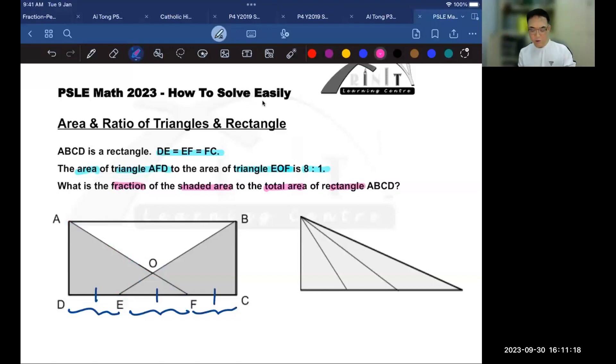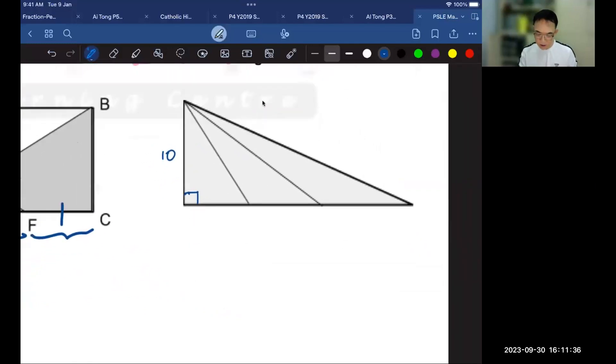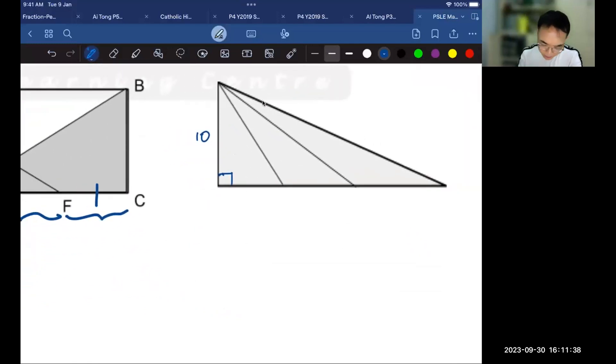Now before we talk about the question proper, let's talk about the concept. So to teach you the concept, I'm going to use some numbers which I'm going to invent. So assuming that this is a right angle triangle, let's say that the height is 10. Now if we were to look at it this way, and let's say I tell you that this portion here is 6, and this portion here is 12, and this portion here is 18, then we know that these are all multiples of 6.